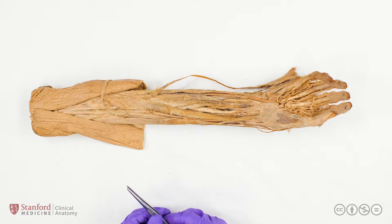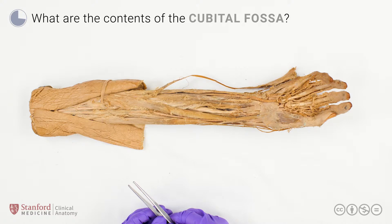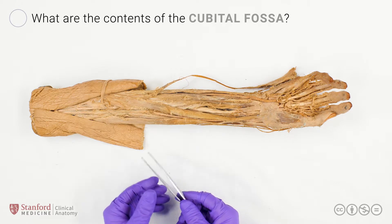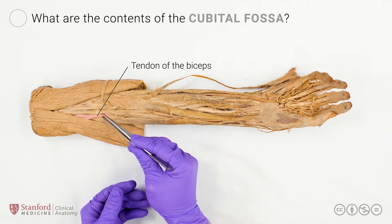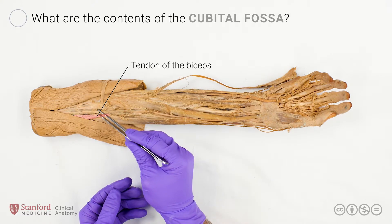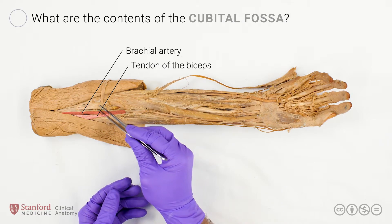Next question: What are the contents, from lateral to medial, of the cubital fossa? From lateral to medial, the three contents of the cubital fossa are the tendon of the biceps muscle, the brachial artery, and the median nerve.